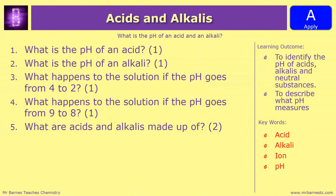We have five questions I'd like you to have a go at. They should all be fairly straightforward now. Number 1: what is the pH of an acid? Number 2: what is the pH of an alkali? Number 3: what happens to the solution if the pH goes from 4 to 2? Number 4: what happens to the solution if the pH goes from 9 to 8? And number 5: what are acids and alkalis made up of?